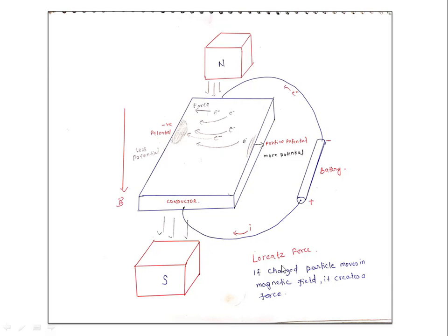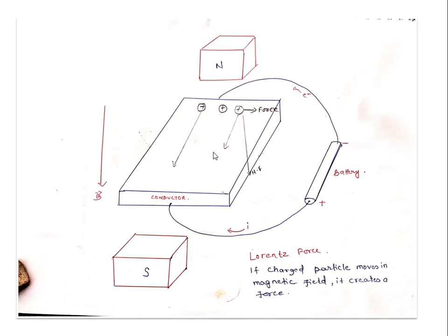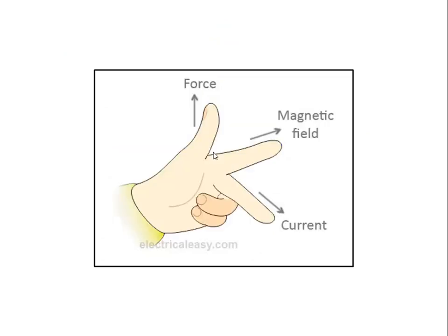So that's all. This Lorentz force on charge particles moving in a magnetic field creates a force. This effect we call Hall effect, and the voltage we call Hall voltage.